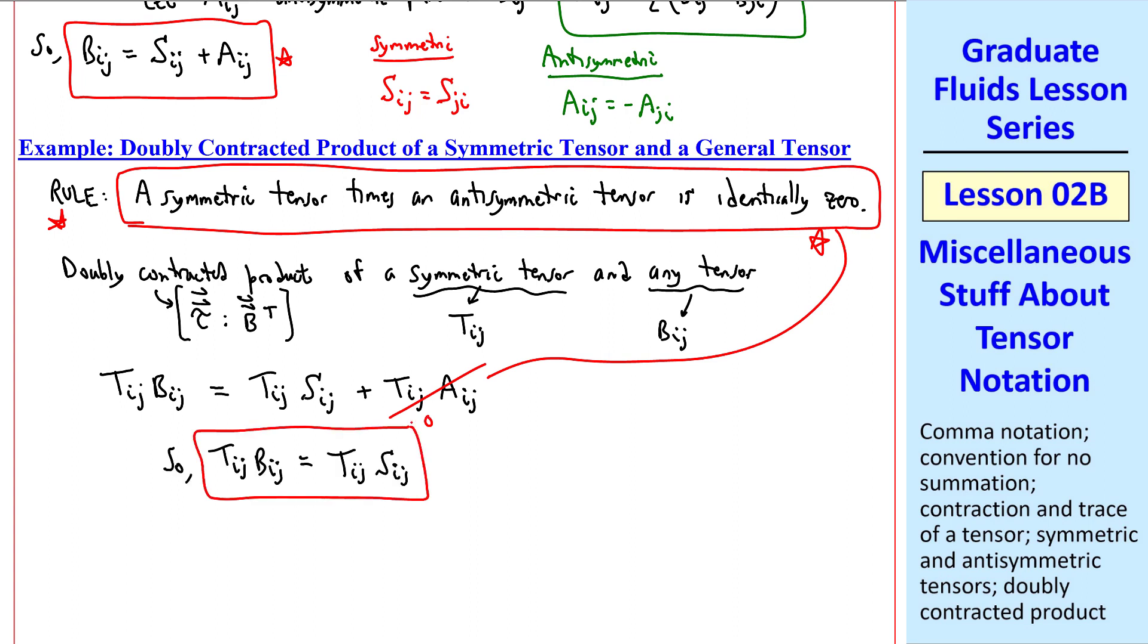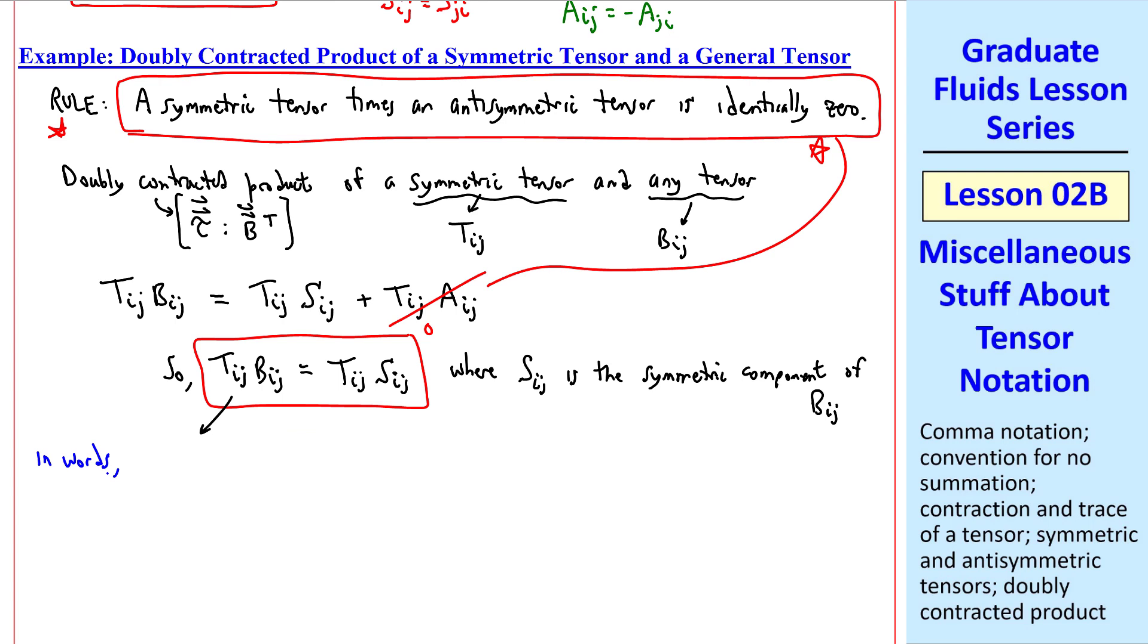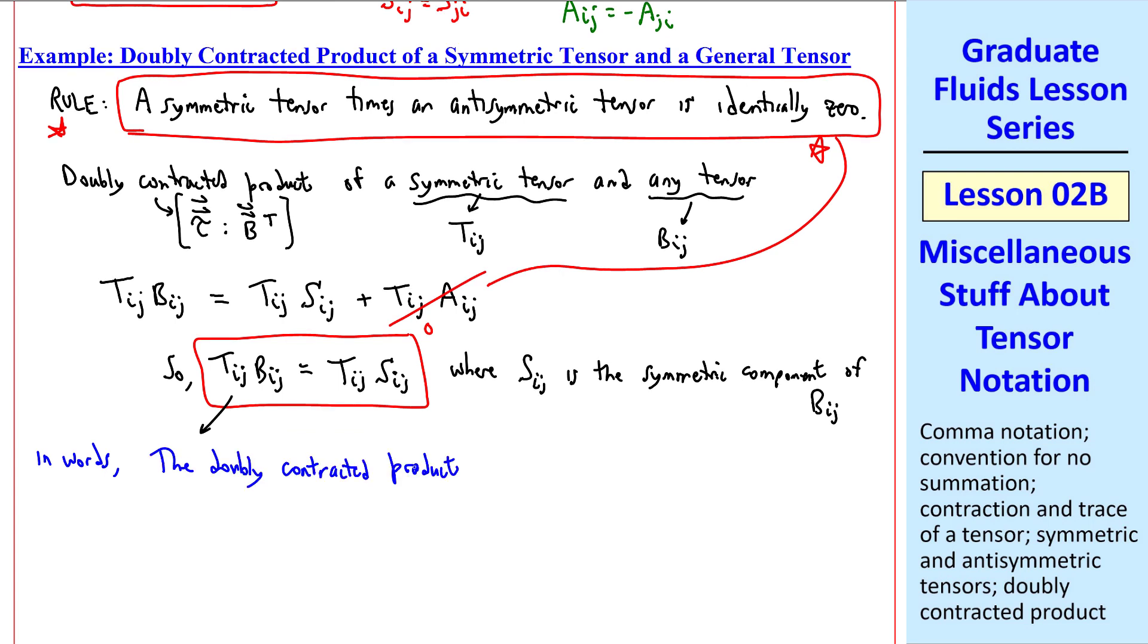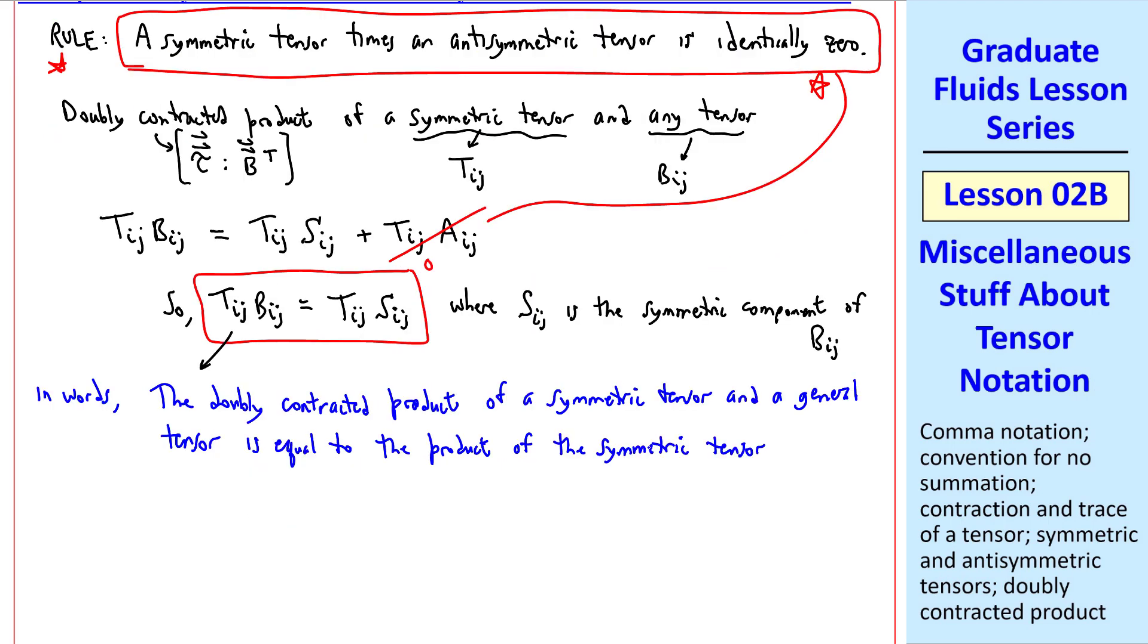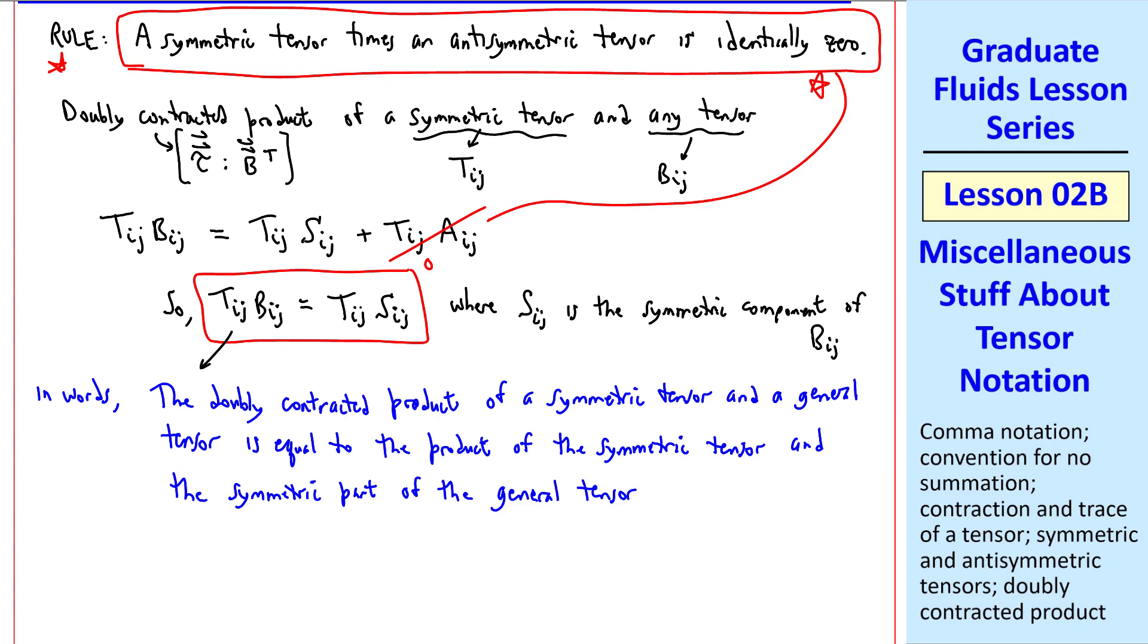So Tij, Bij, is equal to Tij, Sij, where Sij is the symmetric component of second-order tensor Bij. In words, the doubly contracted product of a symmetric tensor and a general tensor is equal to the product of the symmetric tensor and the symmetric part of the general tensor. This will come in handy later on. Anytime we have a symmetric tensor times a general tensor, we can simplify it this way, as stated here.